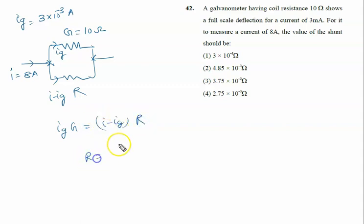So the resistance R is given by ig into G upon i minus ig. Now ig is given to us, that is 3 into 10 raised to power minus 3. Galvanometer resistance is 10 upon i minus ig, which is 8 minus 3 into 10 raised to power minus 3 ampere.